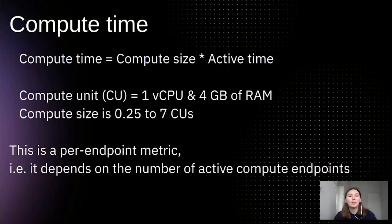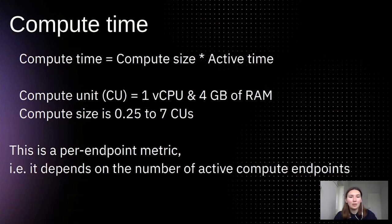The first usage metric is compute time. It reflects the amount of resources used by Neon compute, and this one will affect the price most significantly for active projects. Compute time is calculated as compute size multiplied by active time. The compute size is configurable — one compute can use from one quarter up to seven compute units, where each compute unit provides one virtual CPU and four gigabytes of RAM. By default, compute uses one CU size. You can change this setting in the endpoint configuration. This is a per-endpoint metric, which means it depends on the number of running compute endpoints.